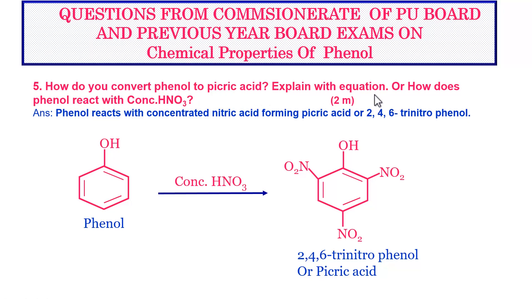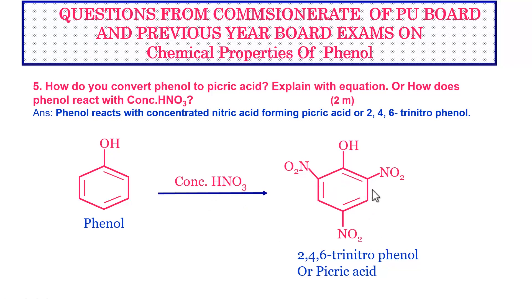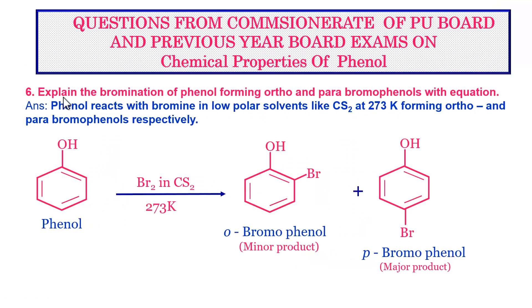Next question: how do you convert phenol to picric acid? Explain with the equation. Alternatively, this may be asked as: how does phenol react with concentrated nitric acid? This is a very important two-mark question. Phenol reacts with concentrated nitric acid forming picric acid, whose chemical name is 2,4,6-trinitrophenol. The equation: C6H5OH + concentrated HNO3 gives trinitrophenol, with nitro groups at the 2nd, 4th, and 6th carbon atoms.